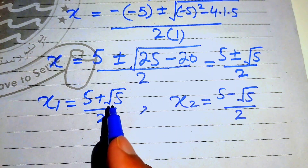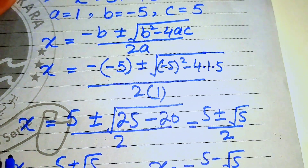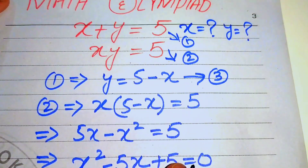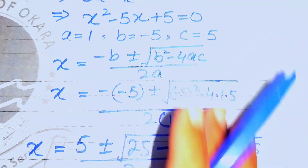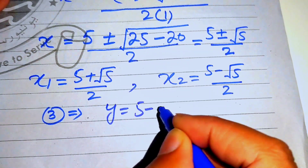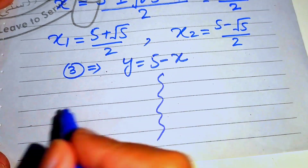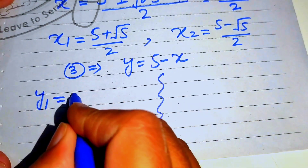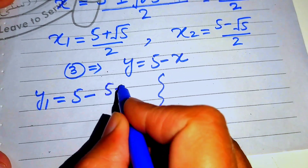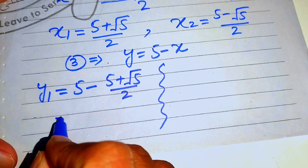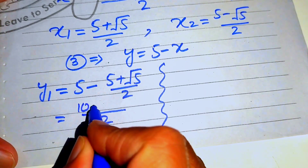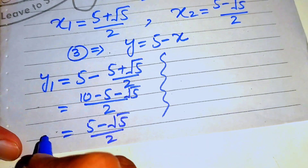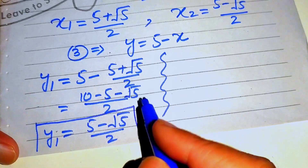Now we find the corresponding values of y using equation number three: y equals 5 minus x. For x1, y1 equals 5 minus (5 plus square root of 5) divided by 2. Taking the LCM, we get (10 minus 5 minus square root of 5) divided by 2, which gives y1 equals 5 minus square root of 5, all divided by 2.